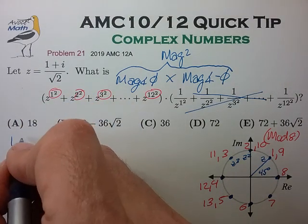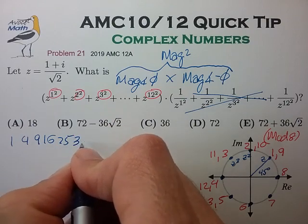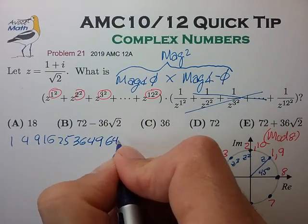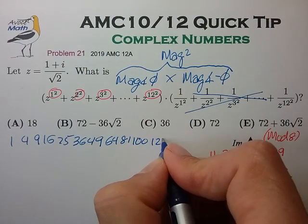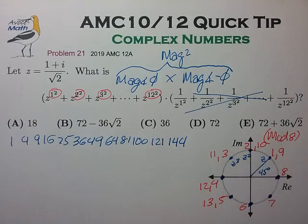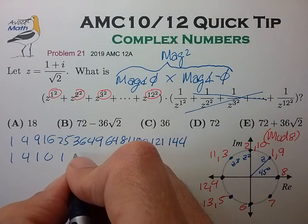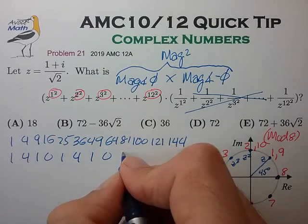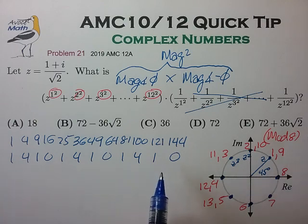So let's write them down. We have one, four, nine, 25, 36, 49, 64, 81, 100, 121, 144. Take these numbers, divide them by eight, keep the remainder. 1, 4, 0, 1, 4, 1, 0, 1, 4, 1, 0. So we have a pattern here that's pretty common when we examine powers in any modulus.